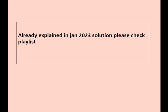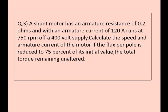Moving to question number 3. A shunt motor has an armature resistance of 0.2 ohm and with an armature current of 120 ampere runs at 750 rpm on a 400 volt supply. Calculate the speed and armature current of the motor if the flux per pole is reduced to 75% of its initial value, the total torque remaining unaltered.